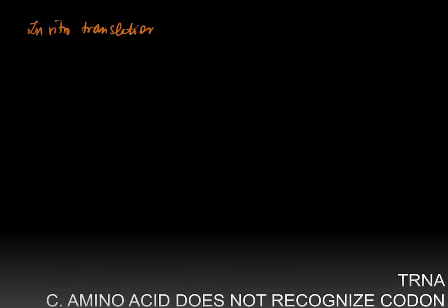So translation carried out in a test tube in which you take aminoacyl tRNA for a particular amino acid. In this case, you have a cysteine tRNA that has been charged by cysteine. So this is the tRNA for cysteine, and now you have charged this tRNA with cysteine.